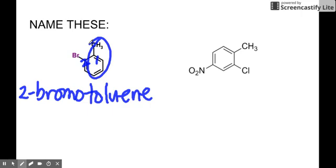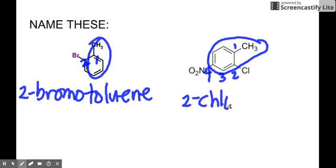On the next example, we know that this is also a toluene because you see CH3 in a benzene ring, while the others are chloro and nitro. So toluene, automatically CH3 is 1. Then we proceed to chlorine, chloro, because that's the one near to the toluene, the CH3. And also alphabetically, C comes first before nitro. So 3, and then the fourth is your NO2, which is nitro. So we're going to name this as 2-chloro-4-nitrotoluene.